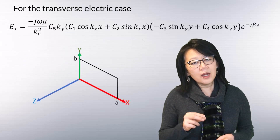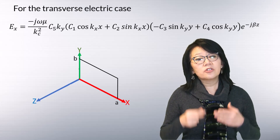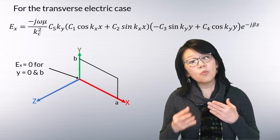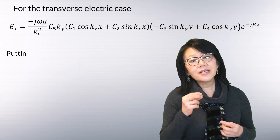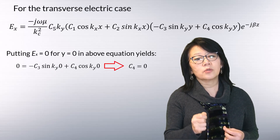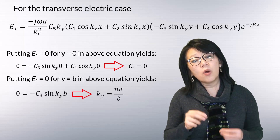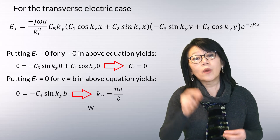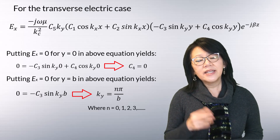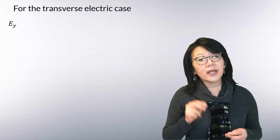Along the y direction, the boundary conditions for the tangential electric field component require Ex equals zero at y equals zero and y equals b. Applying these conditions: for y equals zero, Ex can only be zero if c4 equals zero; and for y equals b, Ex can only be zero if ky equals n·pi over b, where n is an integer with values 0, 1, 2, and so forth.